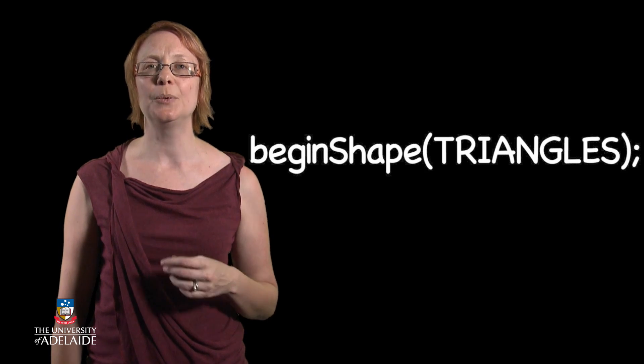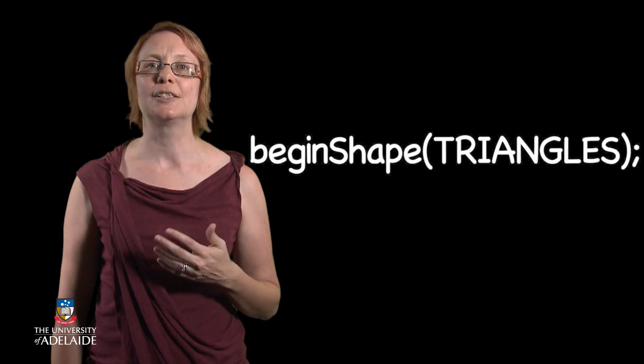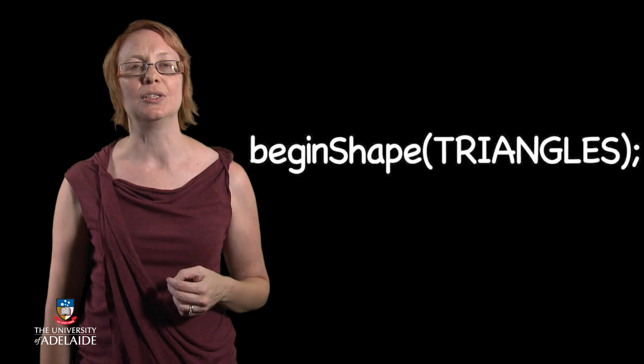For another example, let's look back at the beginShape function that we introduced last week. This function takes a single parameter that tells beginShape how to interpret and draw a shape around a set of vertices, again specializing the execution of the function to the purpose that we want. The main reason you want to create your own functions is when you have identified a selection of code in your own program that you want to use over and over again, or even reuse across lots of your own programs.